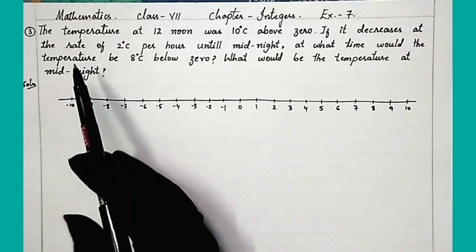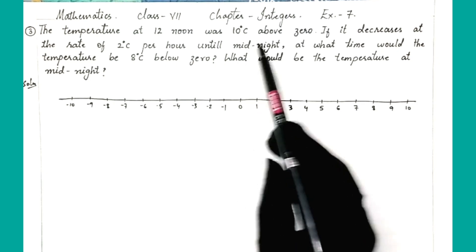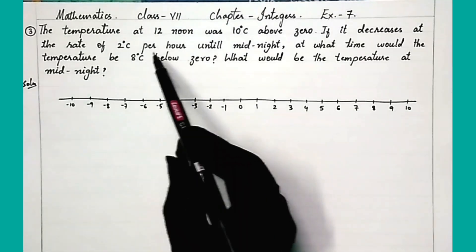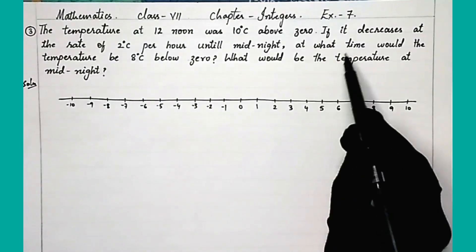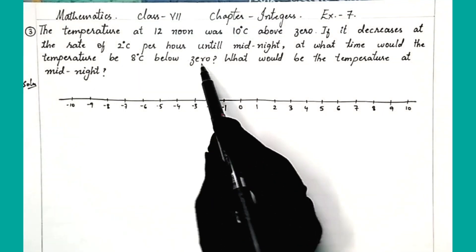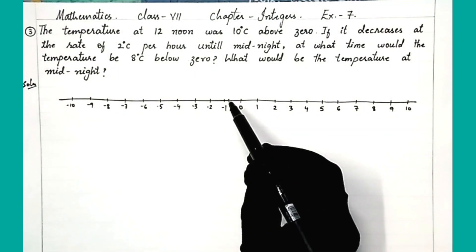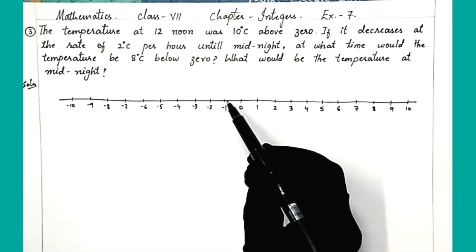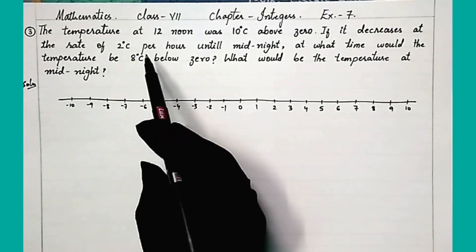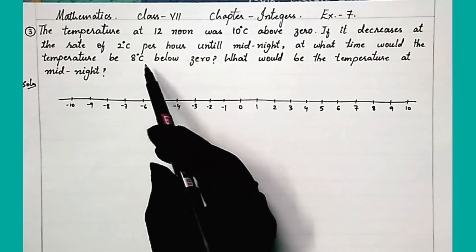This is the third question: The temperature at 12 noon was 10 degrees Celsius above zero. If it decreases at the rate of 2 degrees Celsius per hour until midnight, at what time would the temperature be 8 degrees Celsius below zero?